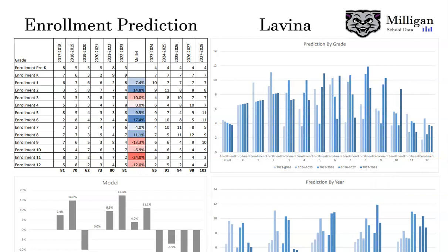We have a couple of visualizations of what that will look like in the future. This top one up here is the prediction by grade. What we do is for all of those numbers in the predictive model, we just look at what does eighth grade look like for the next five years. Each of these bars here is a year in the future. You can see that for this particular school, eighth grade is expected to grow over the next few years, and that's what this graph shows here.